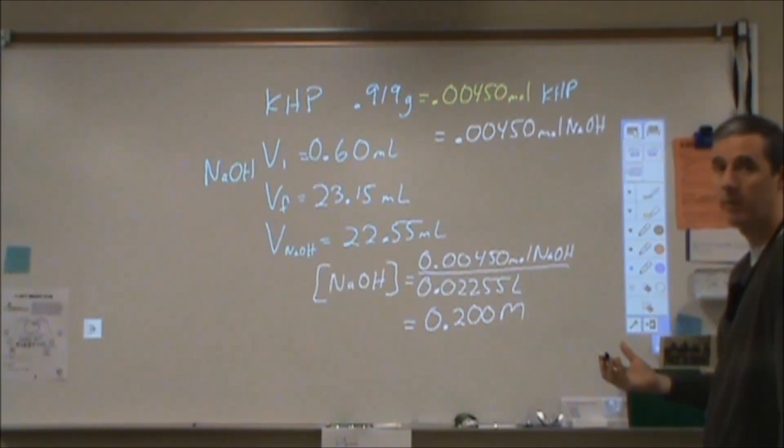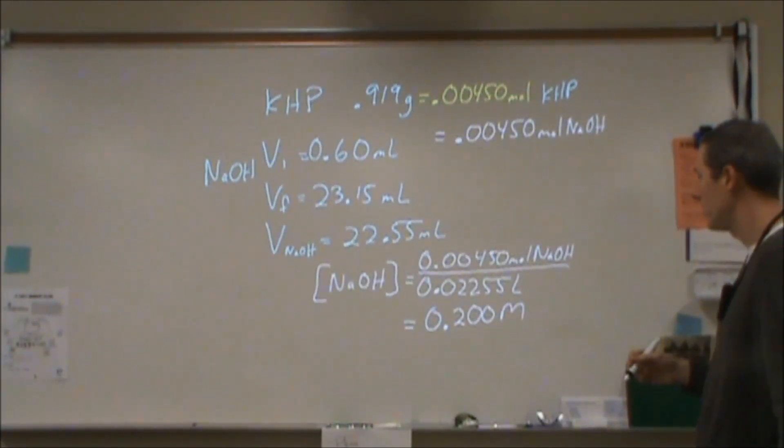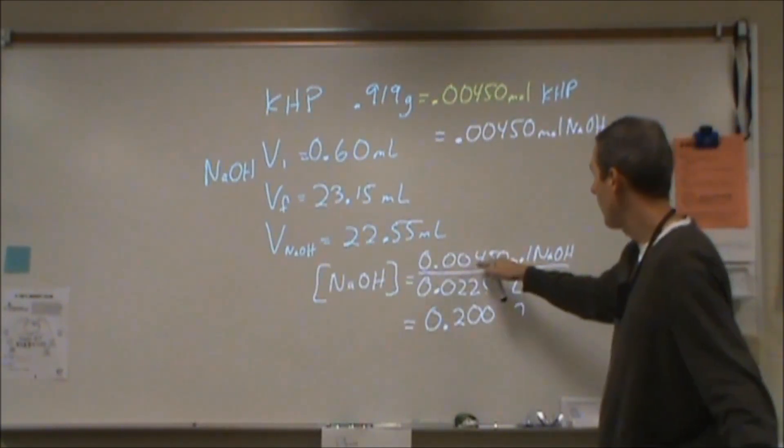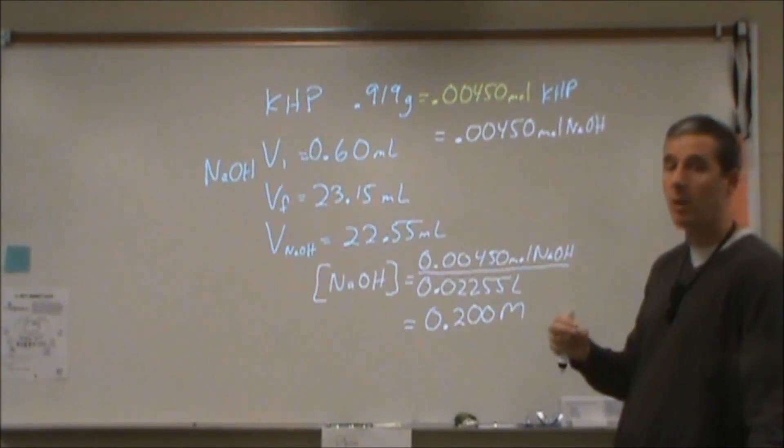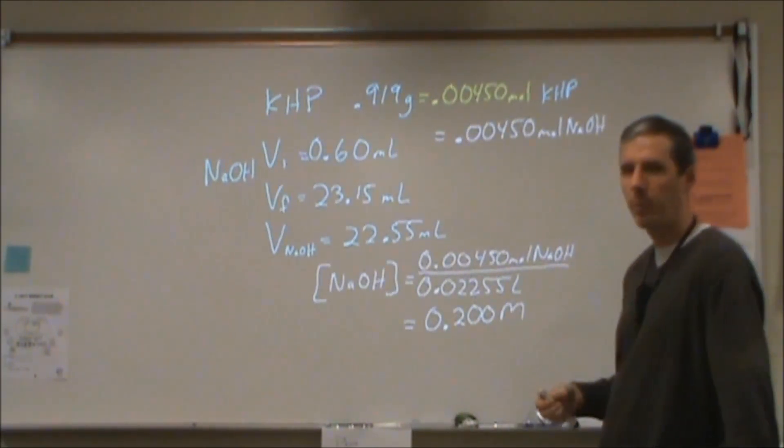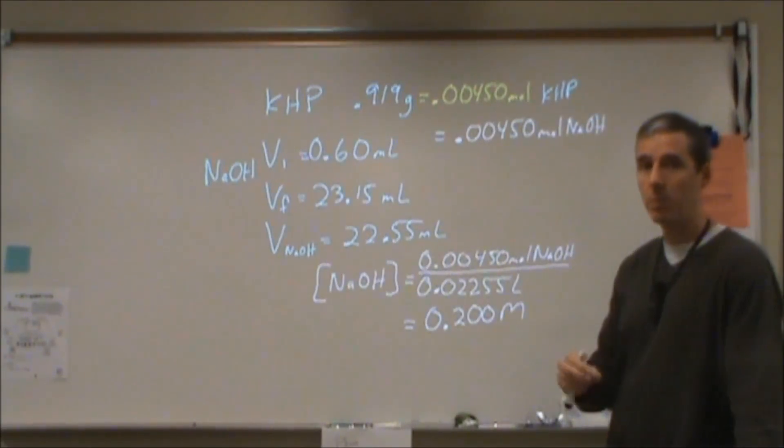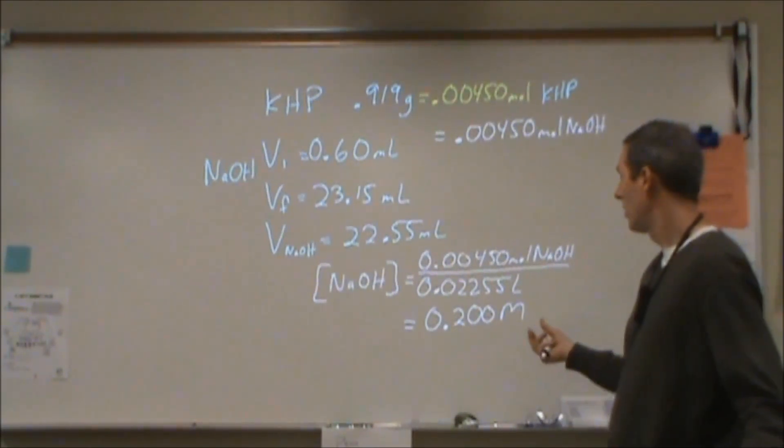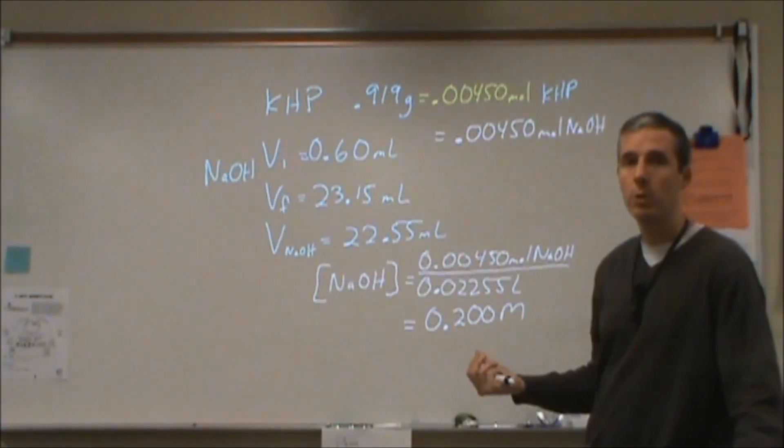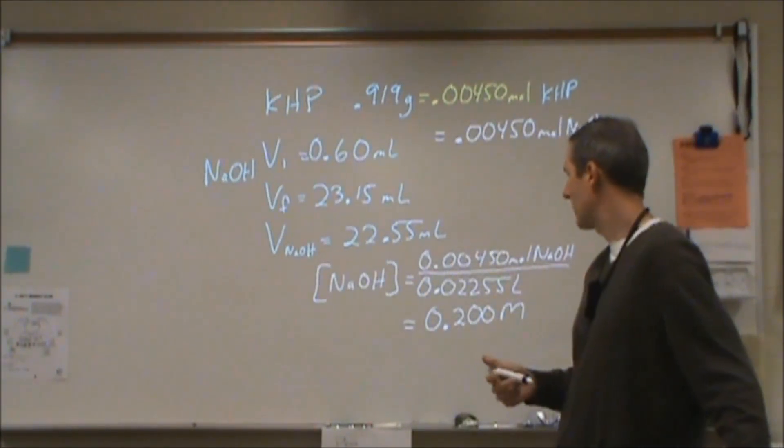But that would be our result of that titration then is that our concentration of sodium hydroxide is 0.200 molar. And I'll point out that we have three sig figs and four sig figs. So we have a concentration now of three sig figs. Whereas before it probably would have been to one without doing the standardization. So that allows us to get a much more precise or accurate of both for future measurements with that sodium hydroxide solution.